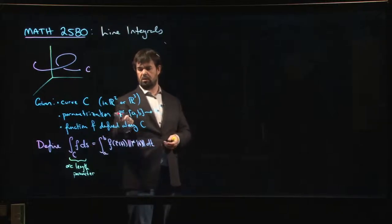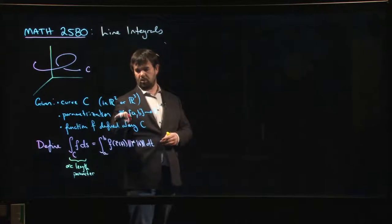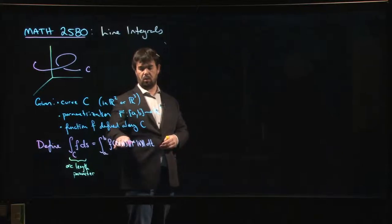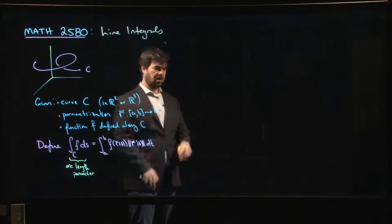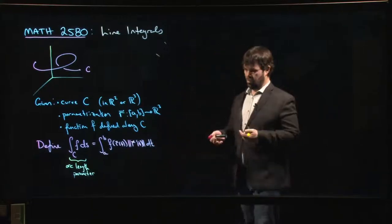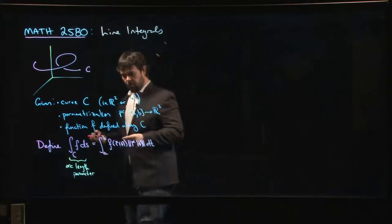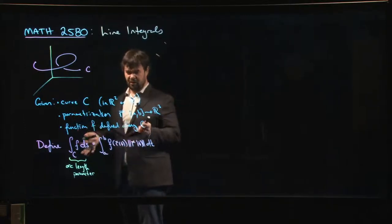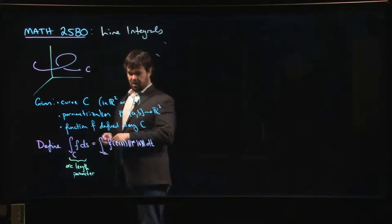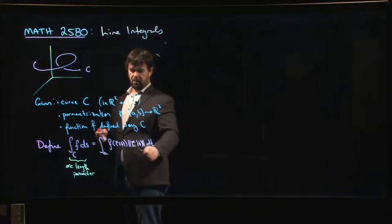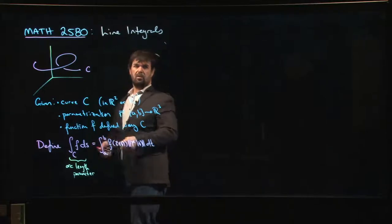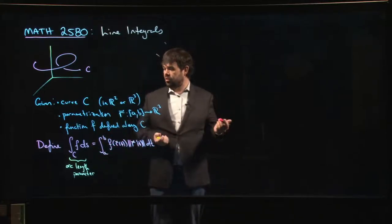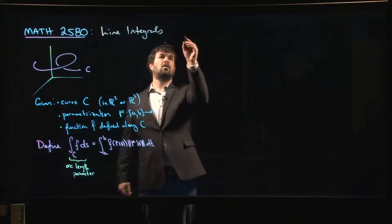Typically you choose some other parameterization. Again, this is one of these places where we abuse notation. We should be thinking of this R as producing points, but we think of it as a vector valued function. Really F is a function of a point, not of a vector, but that's okay, we understand what this means. So it's F of R of T multiplied by the magnitude of R prime, so here's your velocity, times dt.